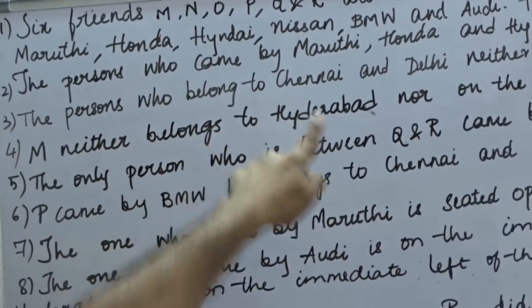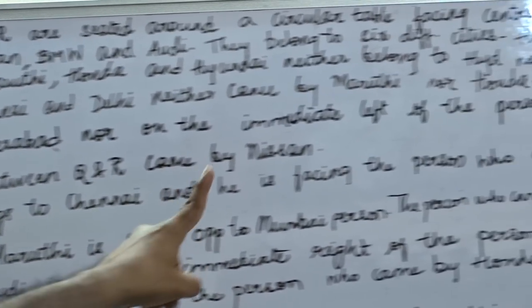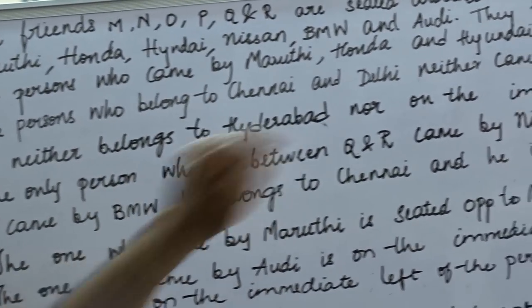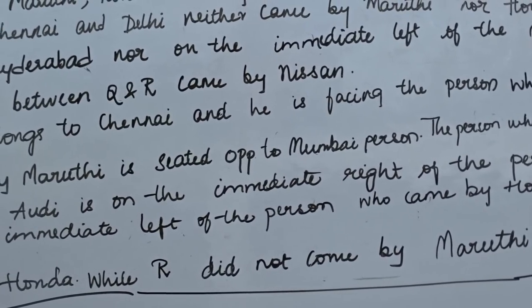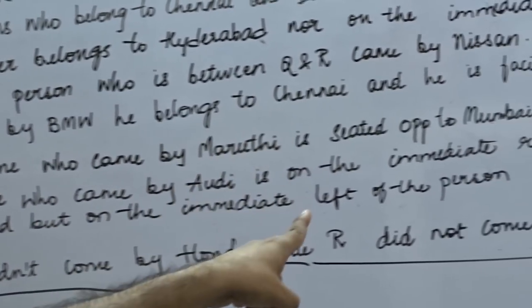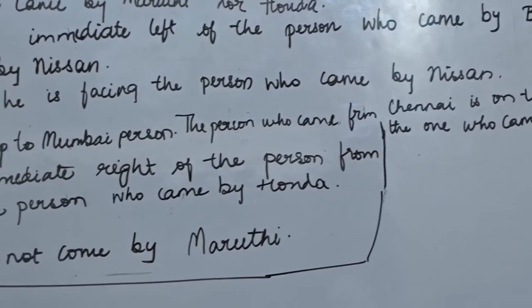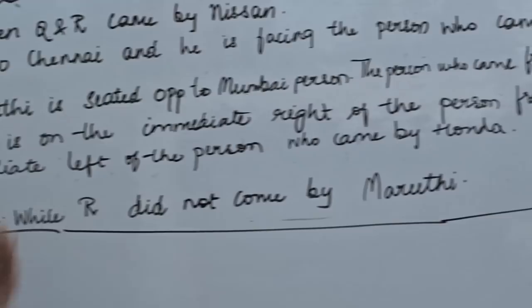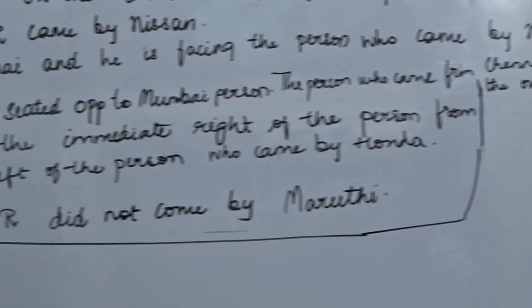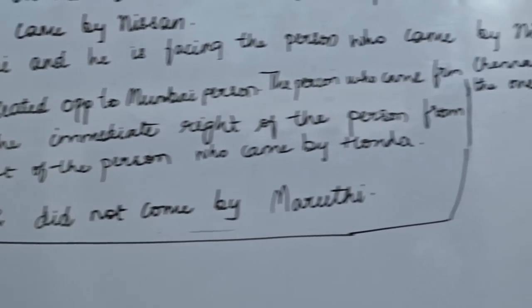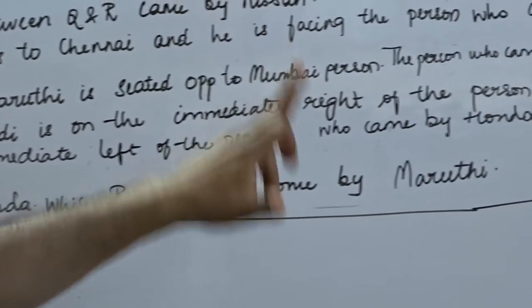The clues are: (1) The persons who came by Maruti, Honda and Hyundai neither belong to Hyderabad nor Bangalore. (2) The persons who belong to Chennai and Delhi neither came by Maruti nor Honda. (3) M neither belongs to Hyderabad nor is on the immediate left of the person who came by BMW. (4) The only person between Q and R came by Nissan. (5) P came by BMW, belongs to Chennai, and is facing the person who came by Nissan. (6) The one who came by Maruti is seated opposite to the Mumbai person. (7) The person from Chennai is not on the immediate left of the one who came by Hyundai. (8) The one who came by Audi is on the immediate right of the person from Hyderabad but on the immediate left of the person who came by Honda. O did not come by Honda, while R did not come by Maruti.